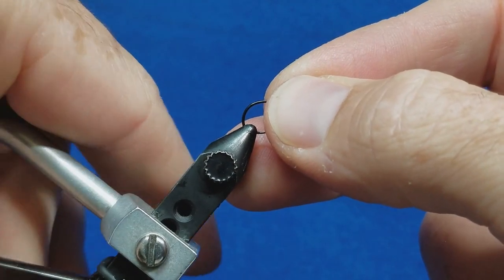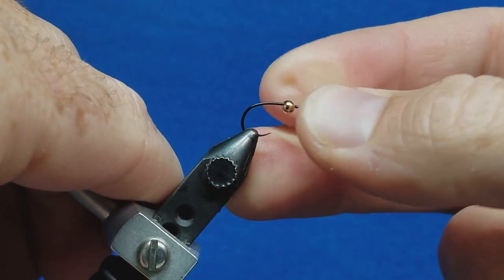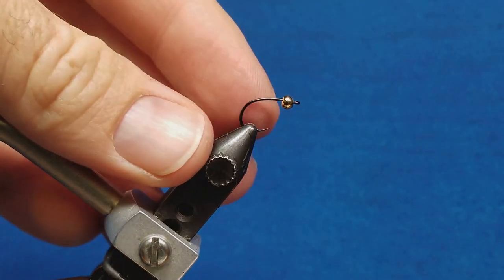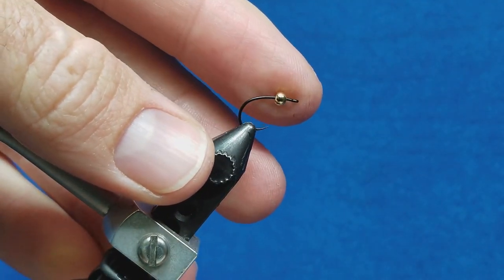One of the bigger fundamental concepts to have locked down when you work with bead heads is the sizing. And so if you look at the screen here you're going to see a typical sizing chart and you can pull these up on Google. This gives you an idea of what size beads should be properly matched with what size hooks. For example, this hook right here is a size 14. Typically it's going to be matched up with a 7/64th bead.